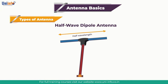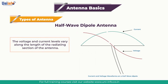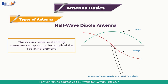The half-wave dipole is normally fed in the middle, where the impedance falls to its lowest. In this way, the antenna consists of a feeder connected to two quarter-wavelength elements in line with each other. It should be remembered that the length of the half-wave dipole is an electrical half-wavelength for the wave travelling in the antenna conductors — slightly shorter than the equivalent length of a wave travelling in free space, as the antenna conductors affect the wavelength. The voltage and current levels vary along the length of the radiating section because standing waves are set up along it.